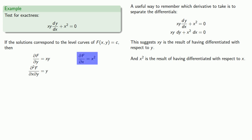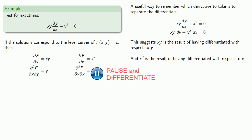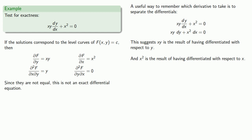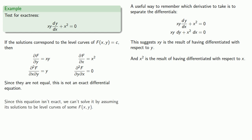We've already differentiated with respect to x, so we differentiate with respect to y, and that gives us 0. Since y and 0 are not equal, these couldn't have come from a single function f(x, y), so this is not an exact differential equation. Since this equation isn't exact, we can't solve it by assuming its solutions are level curves of some f(x, y). Or can we?